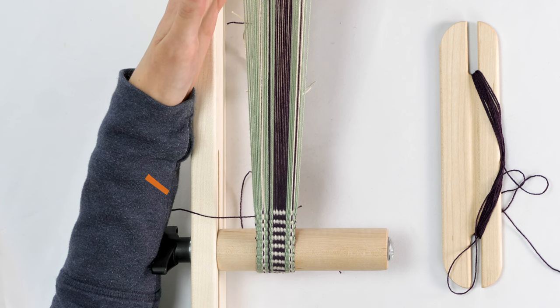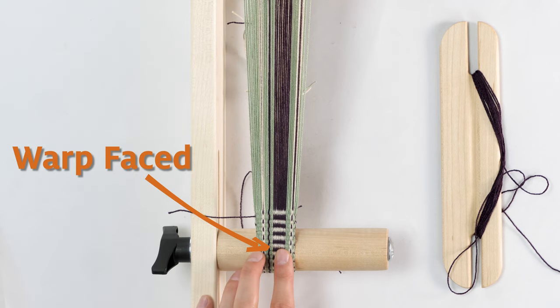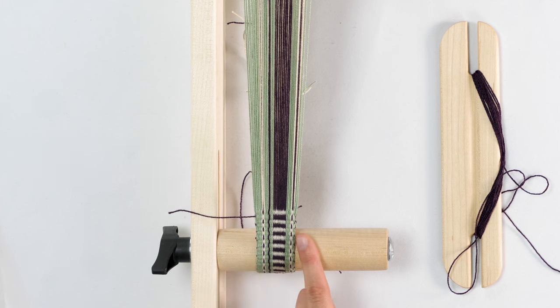On an ankle loom, our fabric is warp-based, meaning that we only see the warp when looking at the finished piece. The weft is visible only on the edges of the weaving, which are called selvedges.